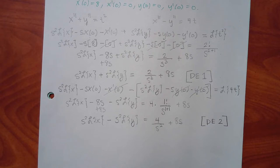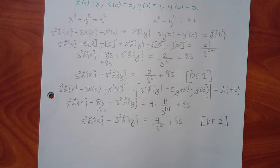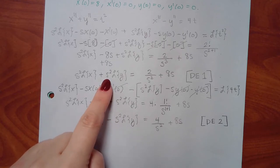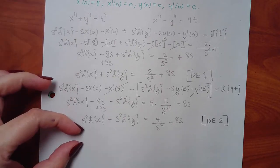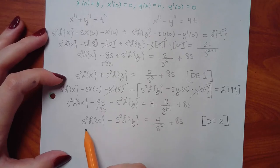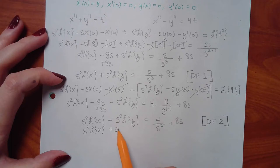Now focus on the two DEs to eliminate variables. Looking at them, the L{y} terms will automatically cancel if we add the equations directly, since DE1 has positive s squared·L{y} and DE2 has negative s squared·L{y}. I'll rewrite DE2 underneath DE1 to make combining the right-hand sides easier.